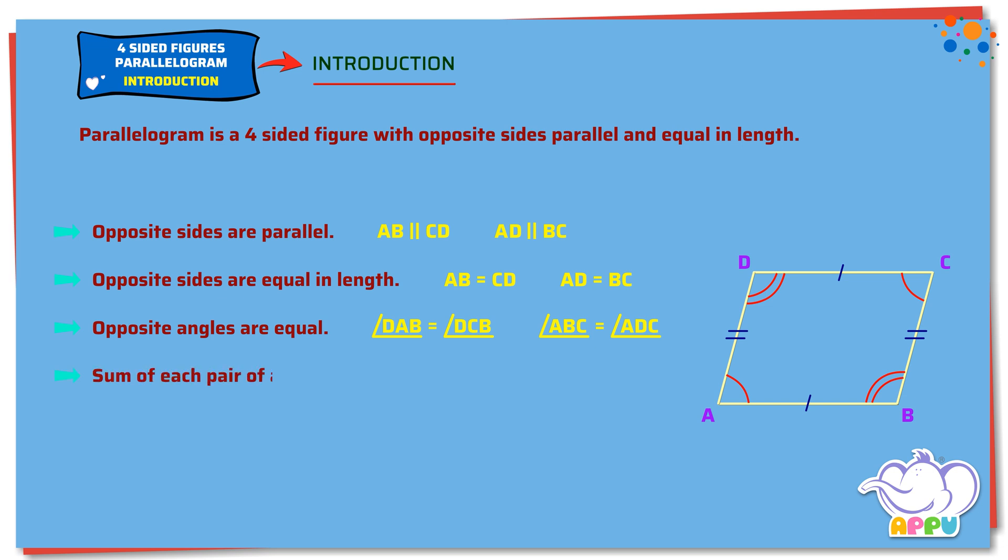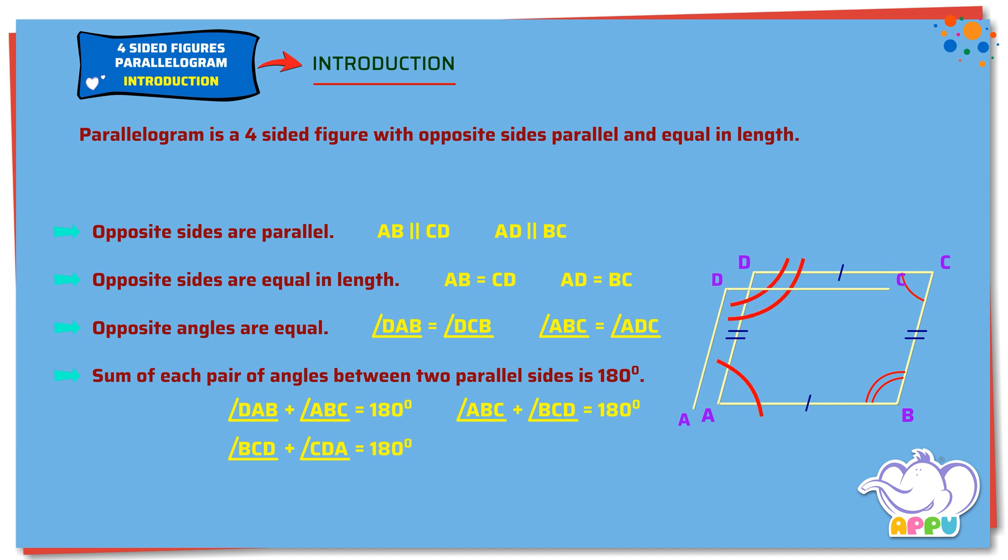Sum of each pair of angles between two parallel sides is 180 degrees. Angle DAB plus angle ABC equals 180 degrees. Angle ABC plus angle BCD equals 180 degrees. Angle BCD plus angle CDA equals 180 degrees. Angle CDA plus angle DAB equals 180 degrees.